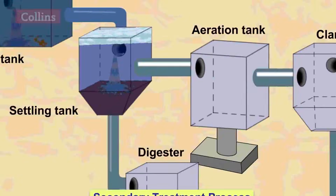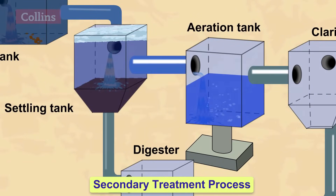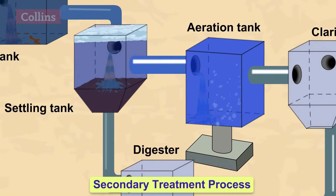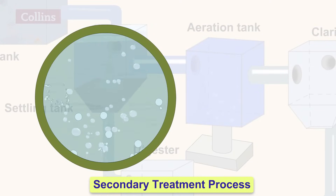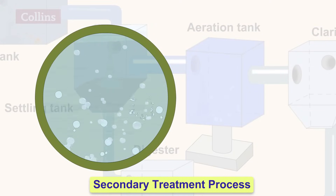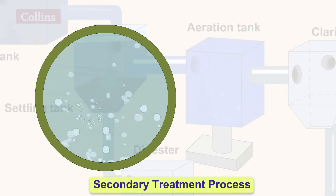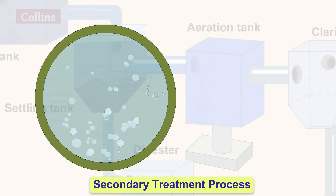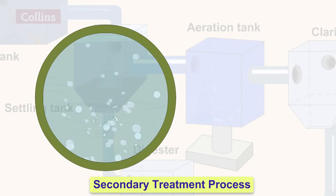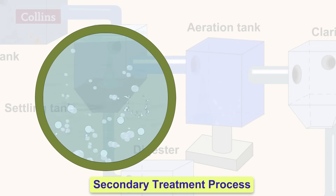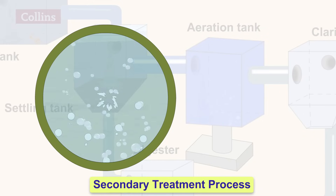In the secondary treatment process, biological or organic wastes are removed. It is a biological process. This is done by transferring the clarified water into an aeration tank where air blowers bubble air, which helps the aerobic bacteria to grow and feed on the organic contaminants such as food waste, feces and other organisms.